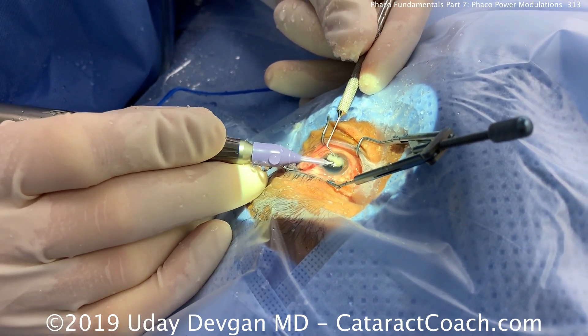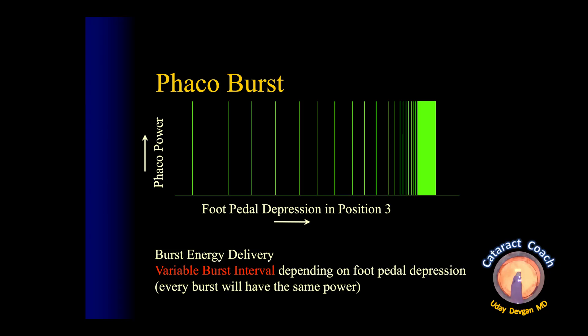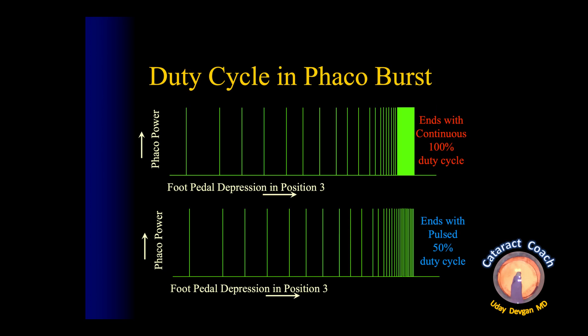Burst mode is different: every burst of phaco power is identical, and as you step on the pedal, it decreases the interval between bursts. At the beginning there are only a few bursts, then at the end the delivery becomes continuous. You can also end the duty cycle in burst mode with either continuous power or a 50% duty cycle.